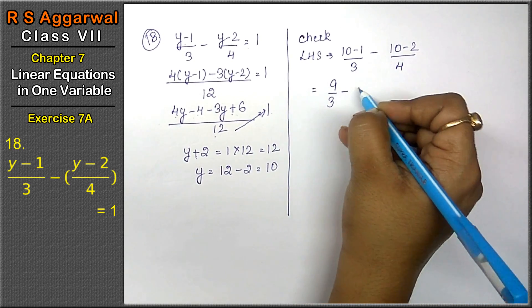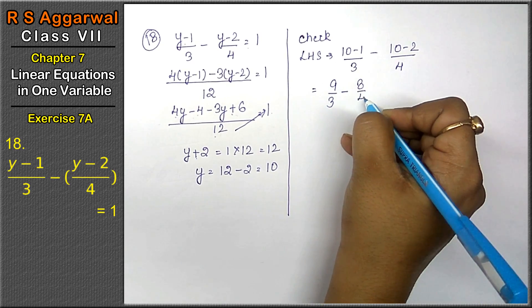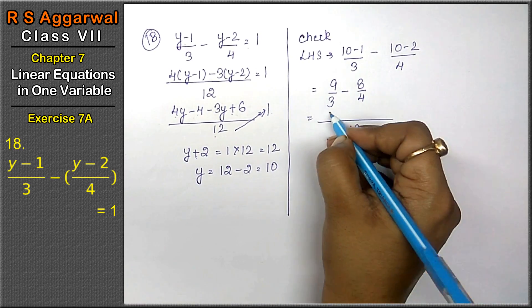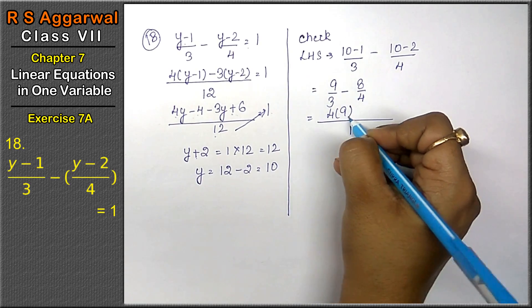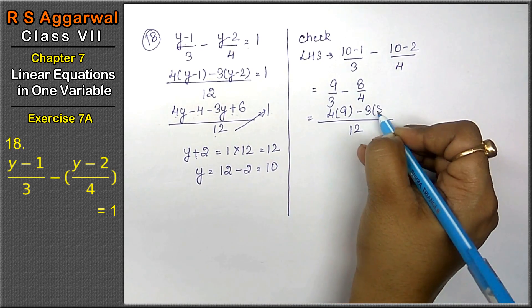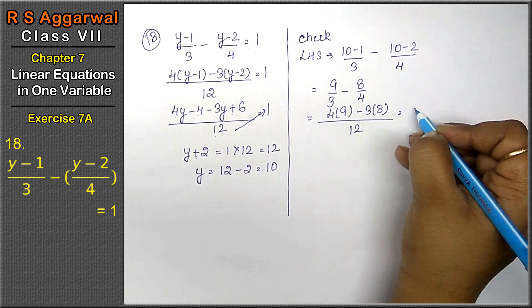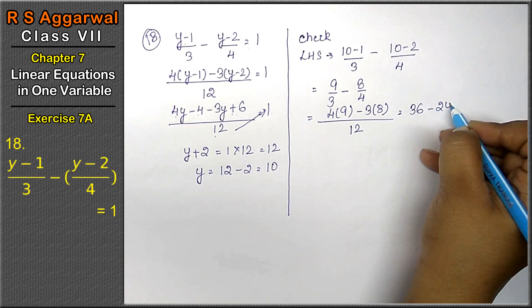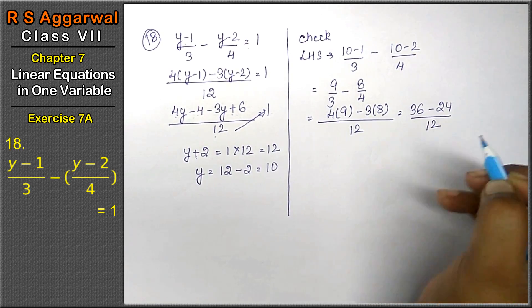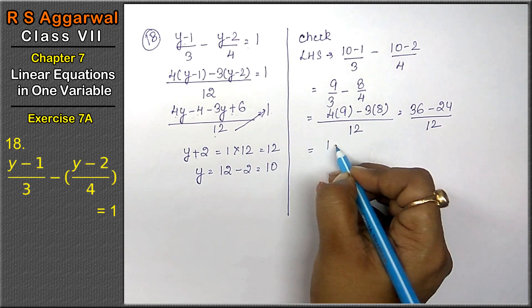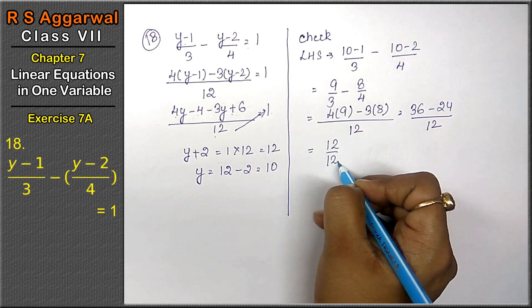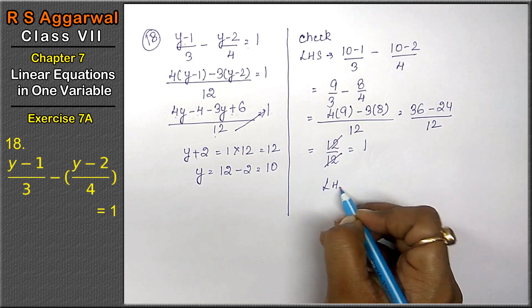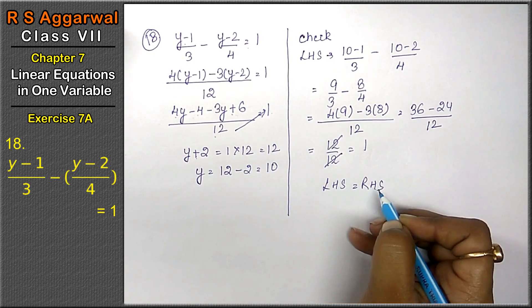10 - 1 is 9 upon 3, minus 10 - 2 is 8 upon 4. Taking LCM 12: 4 times 9 is 36, minus 3 times 8 is 24, upon 12. 36 - 24 is 12 upon 12, which equals 1. Left-hand side equals right-hand side.